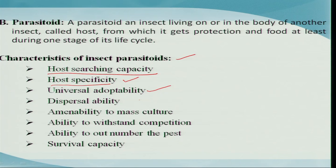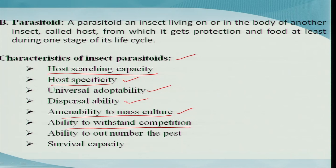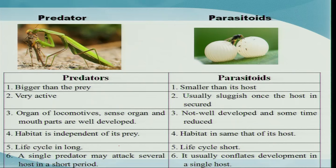It should have universal adaptability — a wider adaptability to withstand abiotic and biotic factors. It should have a good dispersal ability, meaning after multiplication the parasitoid should be able to disperse and find other hosts to control. It should have amenability to mass culture — it should be easily mass cultured under laboratory conditions so it can be released in enormous numbers in the field. It should also withstand competition with other parasitoid species, have the ability to outnumber the pest with a quick multiplication rate, and possess a better survival capacity.